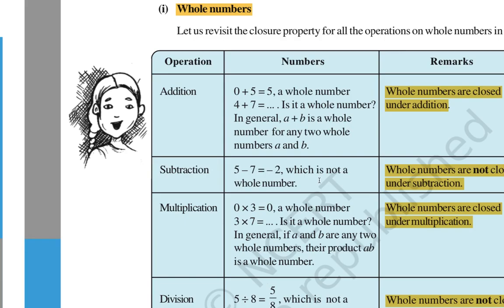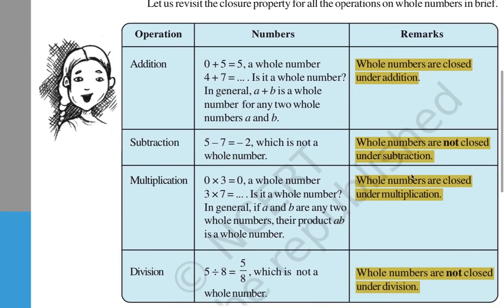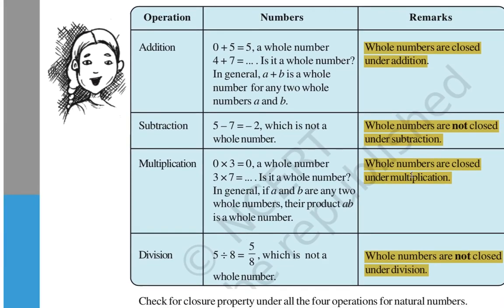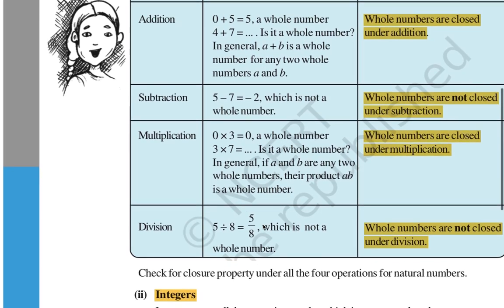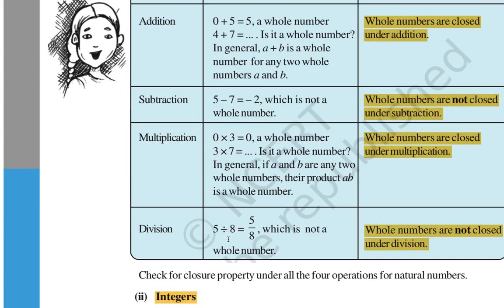So whole numbers are not closed under subtraction. For multiplication, if you multiply any two whole numbers and get a whole number, then it is closed under multiplication — whole numbers are closed under multiplication. For division, if dividing one whole number by another gives a fraction, then it is not a whole number, so whole numbers are not closed under division.